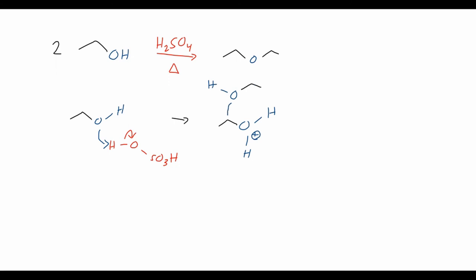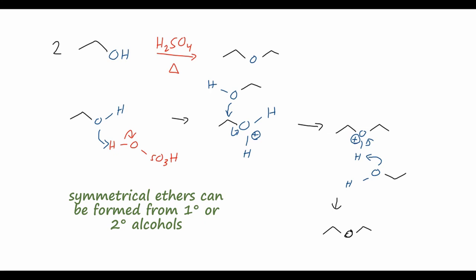Because H2O is a good leaving group, another molecule of ethanol acts as a nucleophile in an SN2 process, kicking off the water to give a protonated ether, which is then deprotonated by another molecule of ethanol to give the diethyl ether product. This is an easy way to form a symmetrical ether. It is very difficult to form asymmetrical ethers this way because you get a large mix of products. Symmetrical ethers can be formed from primary or secondary alcohols with a non-nucleophilic acid like sulfuric acid; tertiary alcohols or higher temperatures give more elimination product.